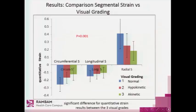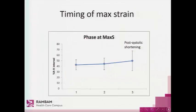This is the comparison between segmental strain and the visual grading. There is a significant difference in the quantitative strain result between the three visual grades — normal, hypokinetic, and akinetic. The timing of the maximum strain in the normal cases is at peak systolic, whereas in the akinetic cases, we see post-systolic shortening.